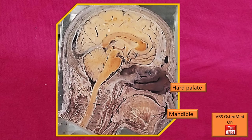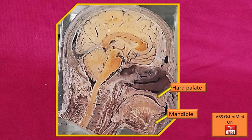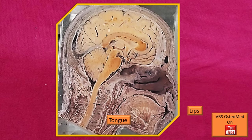Here is a sagittal section of the head and neck region. You can see the hard palate and the cross section of the mandible. In between the two, you can see the orientation and location of the tongue. This is very important: the hard palate is mainly a maxillary contribution and lower down is the mandible. You can also see the tongue and in front are the lips.